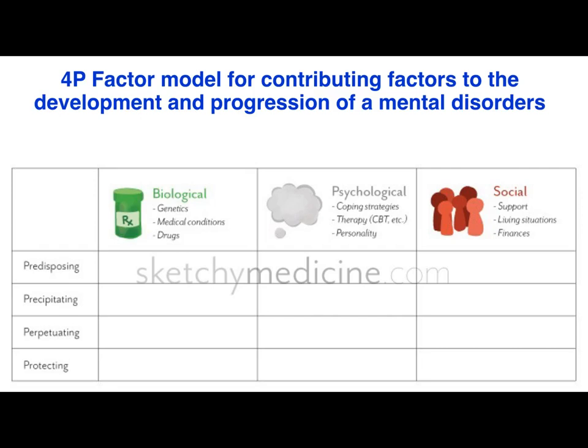In terms of the 4PF model, there are two requirements. Firstly, students need to be able to categorise risk factors into the appropriate P: predisposing, precipitating, perpetuating, or protective. And likewise, using a biopsychosocial approach, come up with biological, psychological, and social examples under each category, which I'm about to go through.